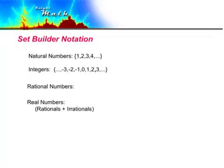In this video we're going to take a look at set builder notation. A set is a collection of items — it can be words, letters, or numbers — and we're specifically going to be looking at numbers here. Our first set is called the natural numbers: 1, 2, 3, 4, and so on and so forth, and we have a name for this set: we call it ℕ.